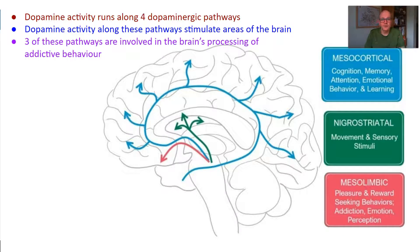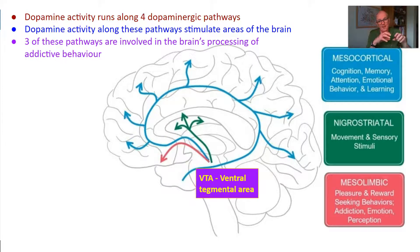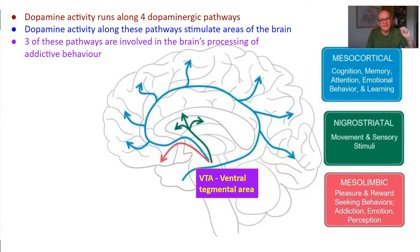Dopamine runs along four dopaminergic pathways, three of which are involved in addictive behavior: the mesolimbic pathway, the nigrostriatal pathway, and the mesocortical pathway. All of these pathways start with an area of the brain called the ventral tegmental area, or VTA. Think of these pathways like information motorways that go to the brain to tell it to be active. When the VTA starts dopamine activity, it has a knock-on effect all the way down the pathway, sending dopamine between each neuron.